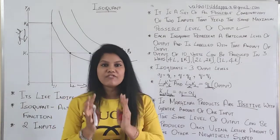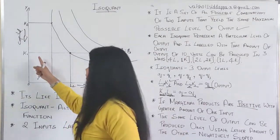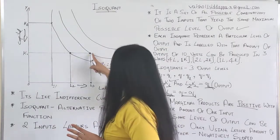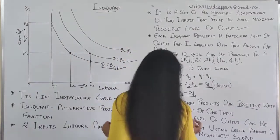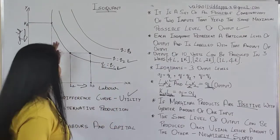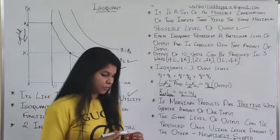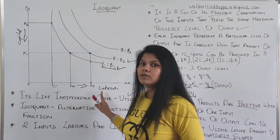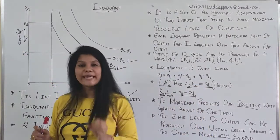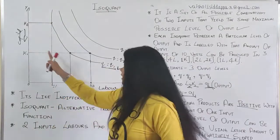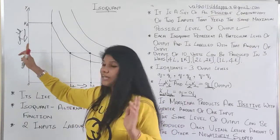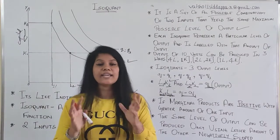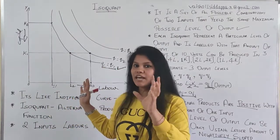Why is it negatively sloped? Because the investment with the producer is very much limited. If he wants to increase the capital, he should reduce the labor number, because the investment is really less. That is why you get convex isoquants that are downward sloping. The simple reason is: if you want to increase capital, you have to reduce labor. You cannot use only labor or only capital to increase production — both should be used, but in what proportion is in your hands as the decision maker.